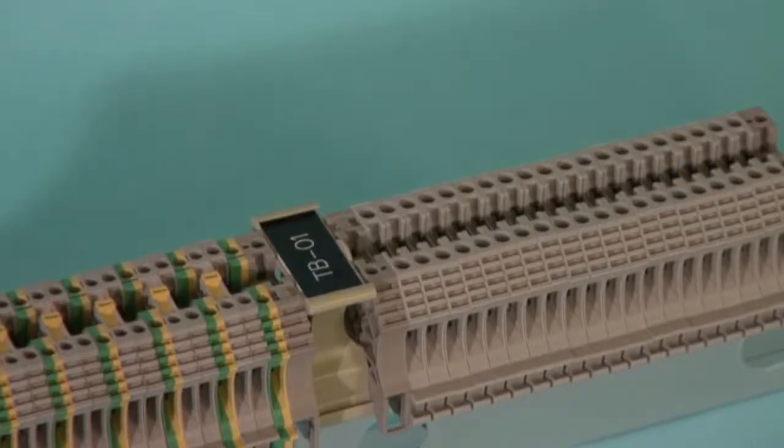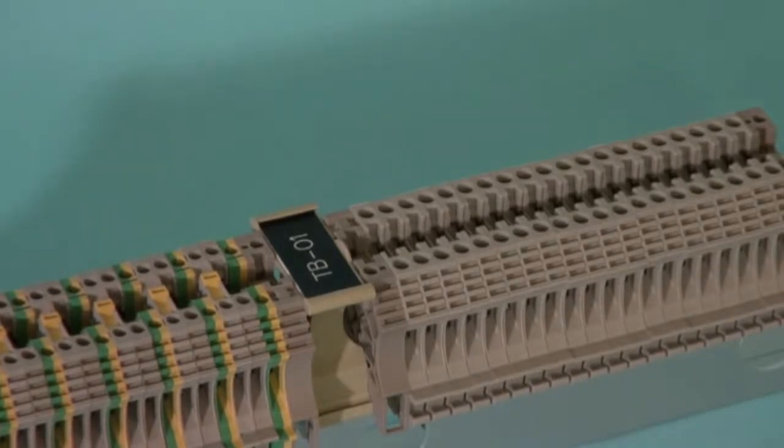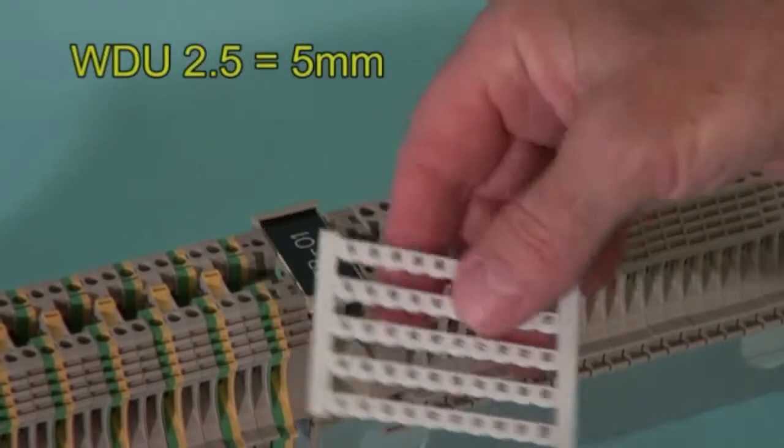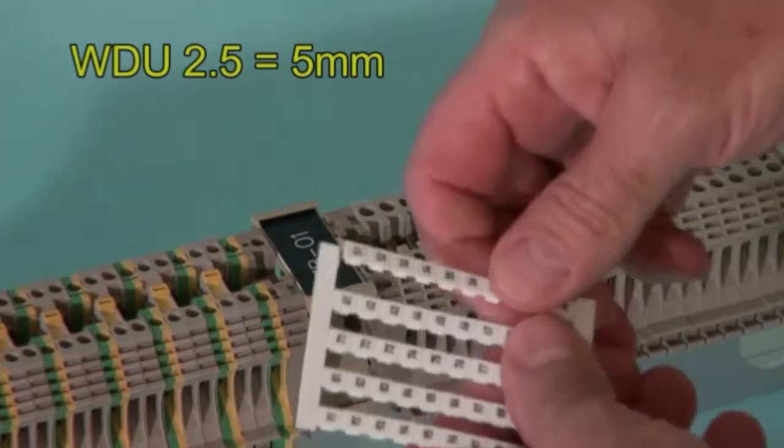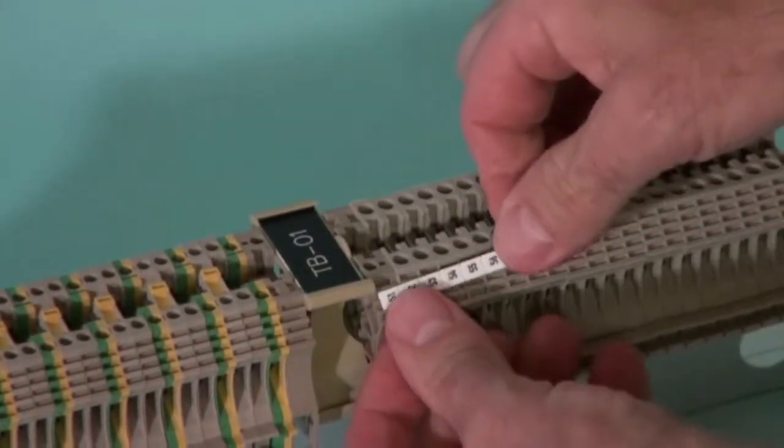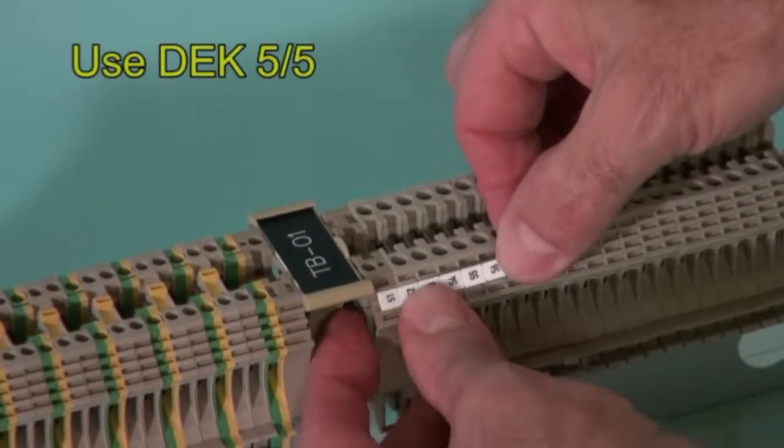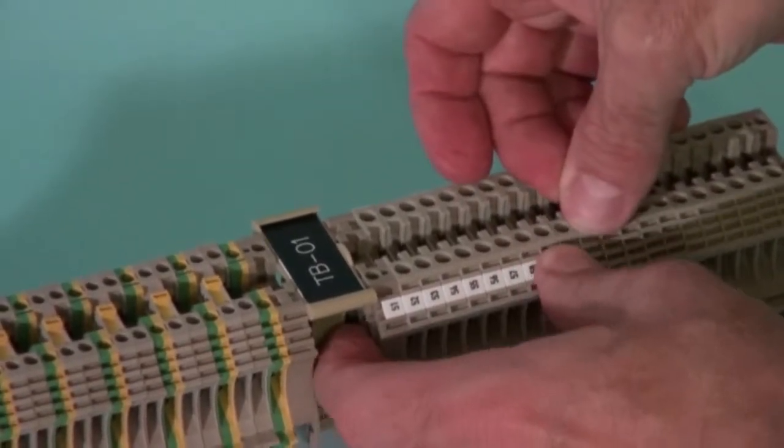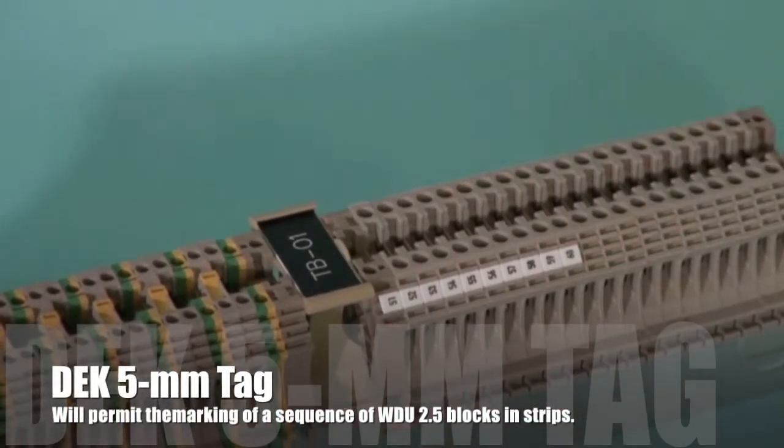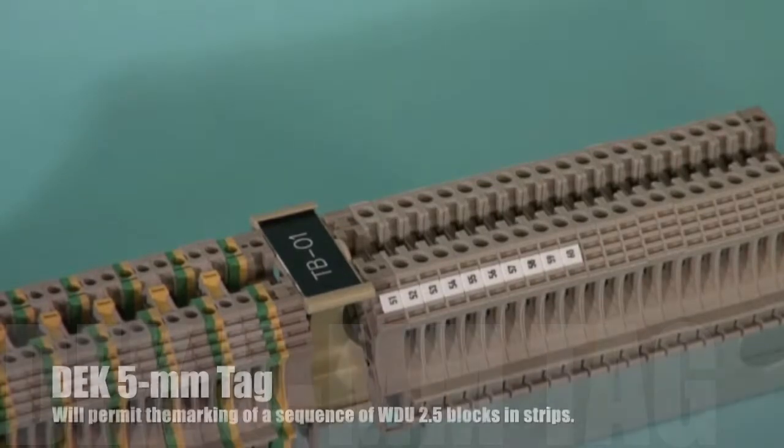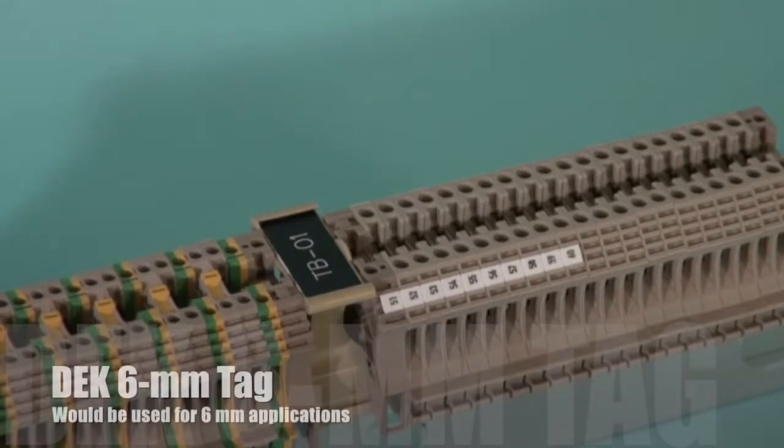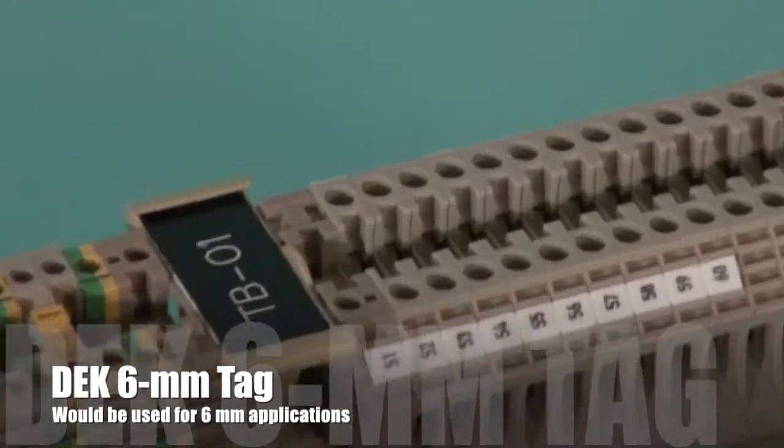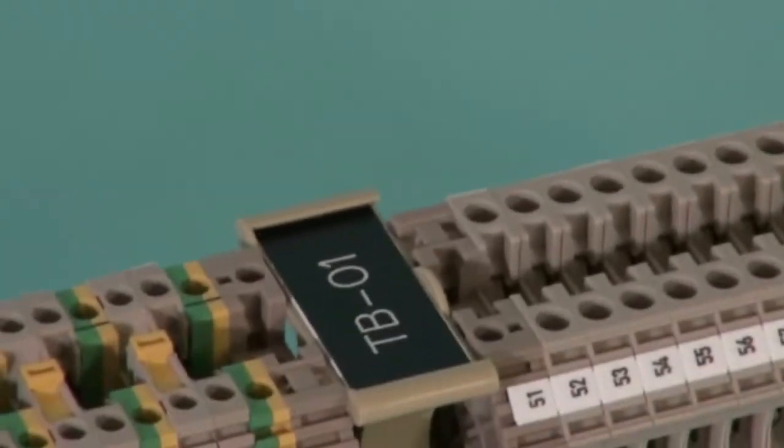Generally, the tag width will be chosen to match the width of the terminal block. For example, a WDU 2.5 is 5mm thick, so a DEK 5 5mm tag will permit the marking of a sequence of WDU 2.5 blocks using strips. Similarly, a WDU 4 is 6mm wide, so a DEK 6 would be used.